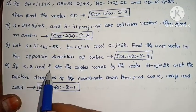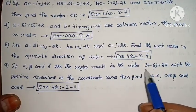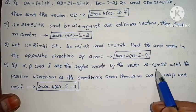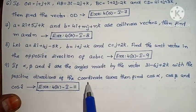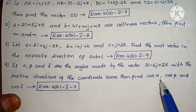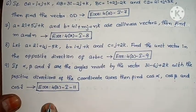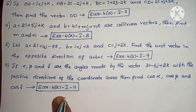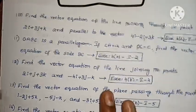Next: If α, β and γ are the angles made by the vector 3i minus 6j plus 2k with the positive directions of the coordinate axes, then find cos α, cos β and cos γ. Exercise 4A, problem 9.